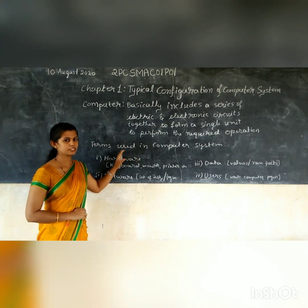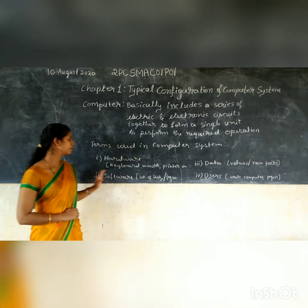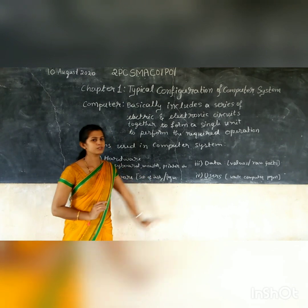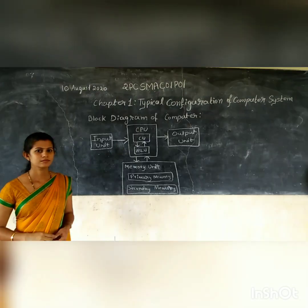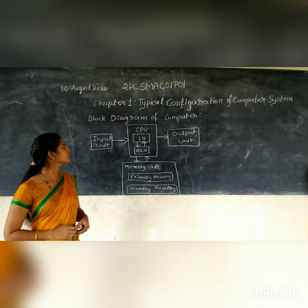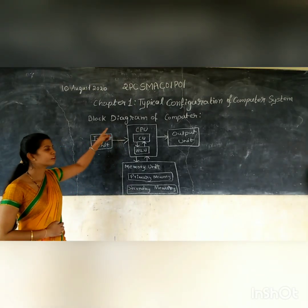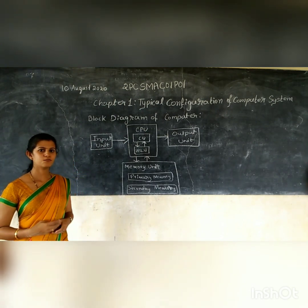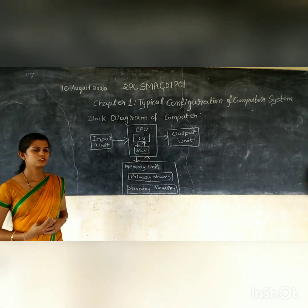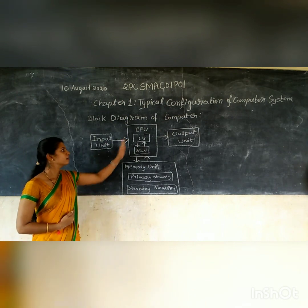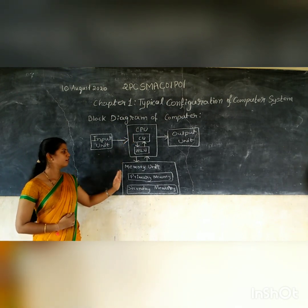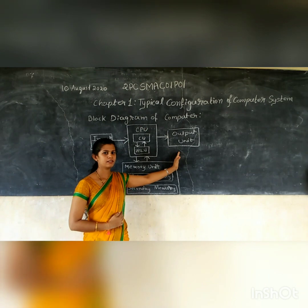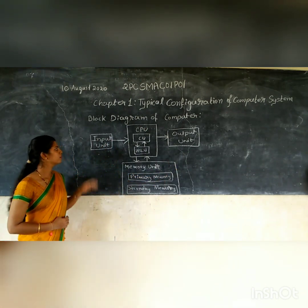So the four terms used in the computer are hardware, software, data, and user. Next topic is the block diagram of a computer. The computer is designed by using four units: those are input unit, central processing unit, memory unit, and output unit. We will see one by one.